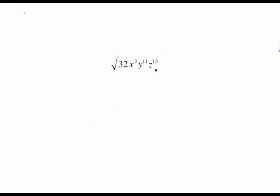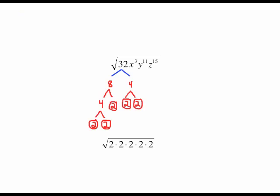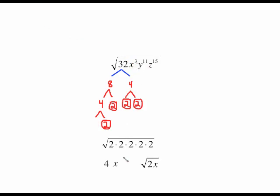Let's put a coefficient in front with all odd powers. The coefficient is dealt with separately. For the square root of 32, do a factor tree: 32 breaks into all 2's — two pairs of 2's — so a 4 comes out on the outside and a 2 stays inside. Leave space for the variables. Two goes into 3 once with 1 left over, giving x to the first. Two goes into 11 five times with 1 left over, giving y to the fifth with a leftover y. Two goes into 15 seven times with 1 left over, giving z to the seventh with a leftover z. And that's your simplified expression.